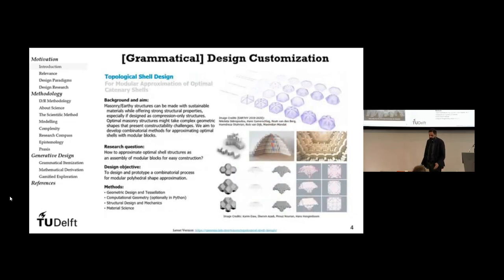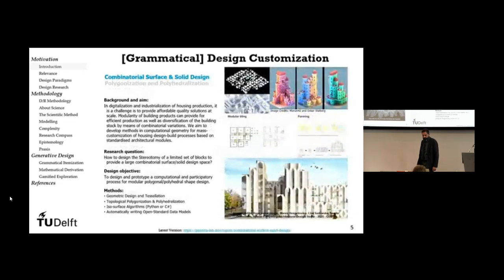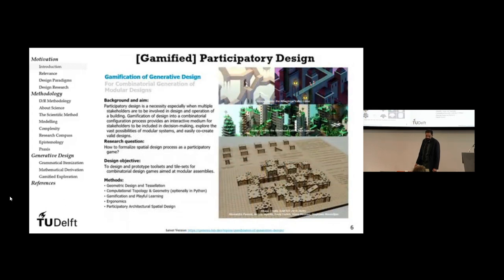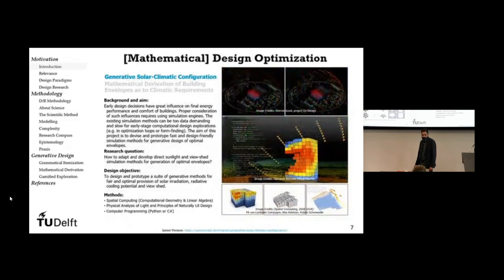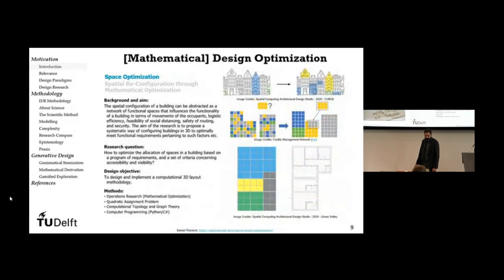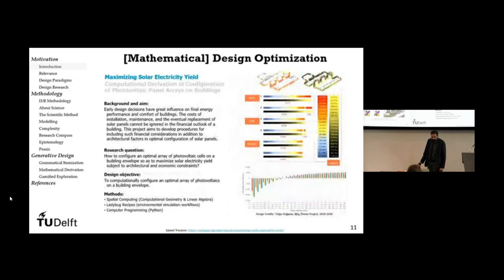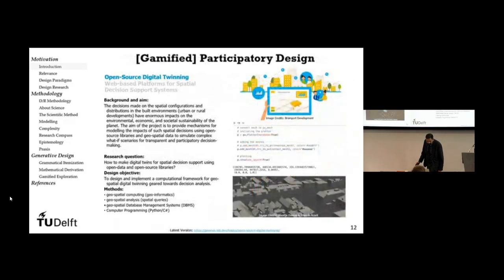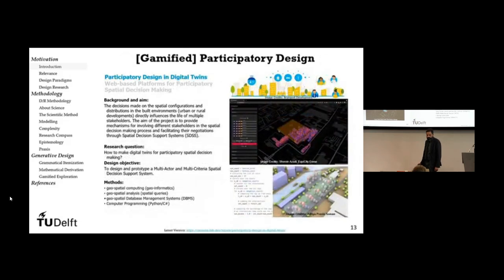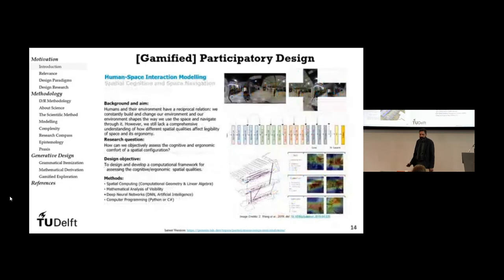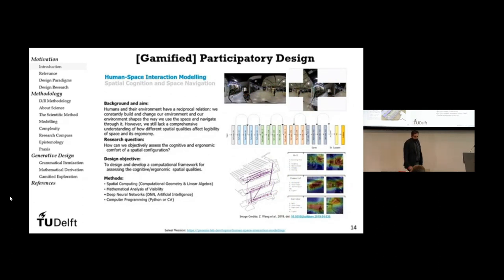The three major topics are: mathematical design optimization, such as topology optimization and shape optimization; grammatical design customization; and gamified participatory design, as well as some projects related to artificial intelligence and digital twinning — all for the purposes of design optimization, design customization, and participatory design.